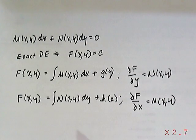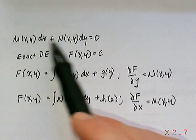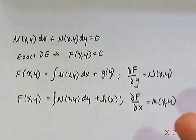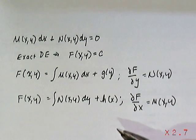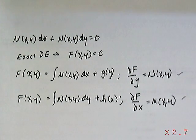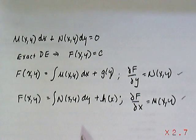So the strategy of how to figure out what this F(x,y) is depends on which integration you want to do. I usually recommend doing the easiest one, the one that looks like you can integrate first, and then use this other partial information to get the remaining term, g(y) or h(x).